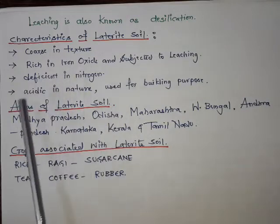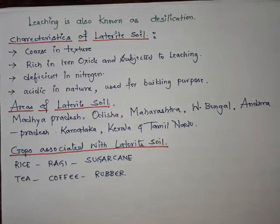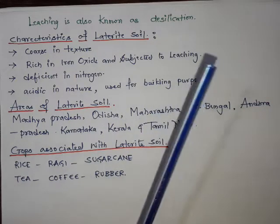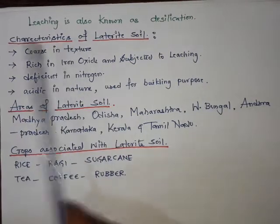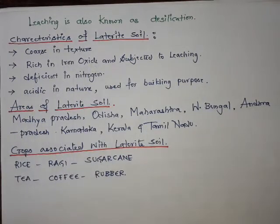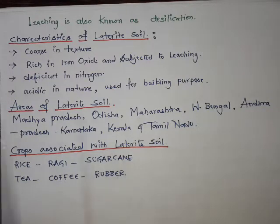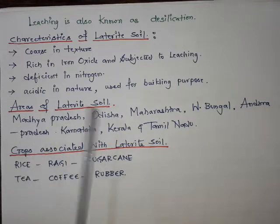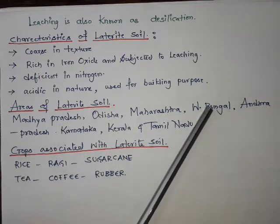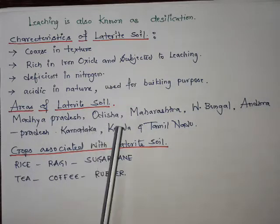Laterite soil is acidic in nature and is used for building purposes — this is its one advantage. Drawbacks include being coarse in texture, rich in iron oxide, deficient in nitrogen, and acidic in nature. Red soil is also acidic. Areas of laterite soil include Madhya Pradesh, Odisha, Maharashtra, West Bengal, Andhra Pradesh, Karnataka, Kerala, and Tamil Nadu.